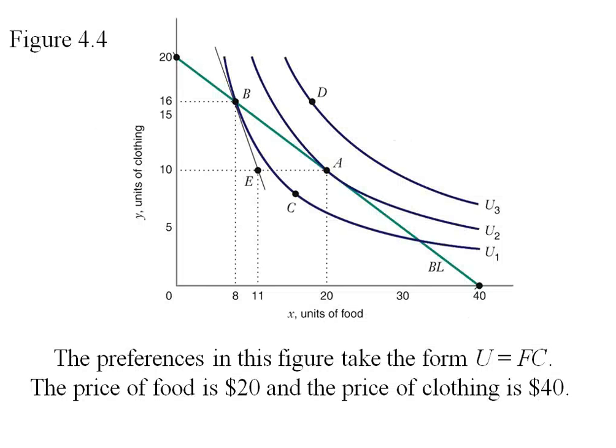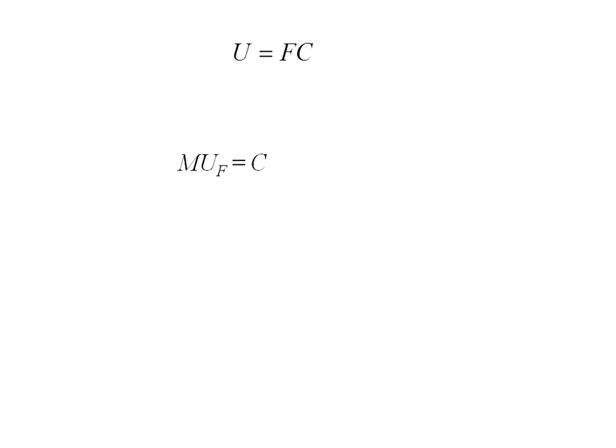Here's figure 4.4 from the book. The preferences in this figure take the form utility equals f times c. The price of food is $20 and the price of clothing is $40. With the functional form f times c, the marginal utility of f is equal to c, and the marginal utility of c is equal to f.